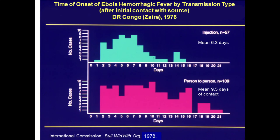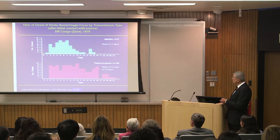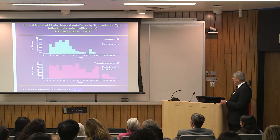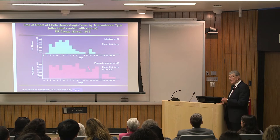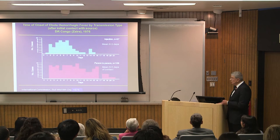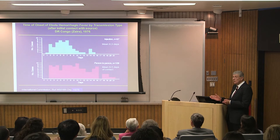Here is the incubation period we found. For those who received injections, there was a nice curve with a mean and median of about six or seven days. For those who had person-to-person contact, the time had gone to 21 days — though this includes the first contact the patient had with another, so the actual incubation period of 9.5 days may have been much shorter. We don't know exactly when infection occurred.